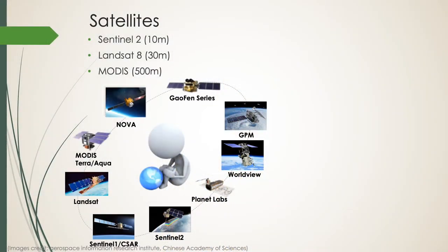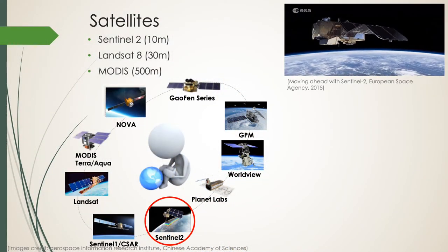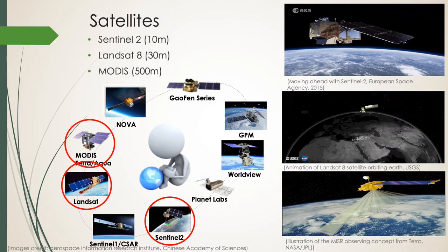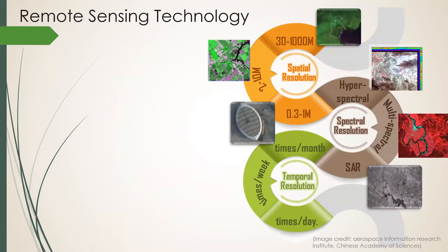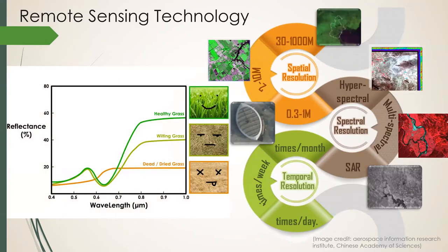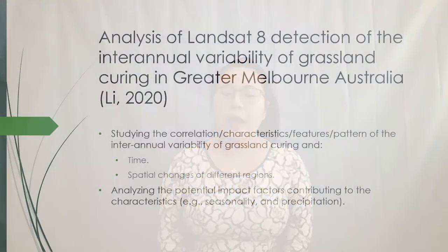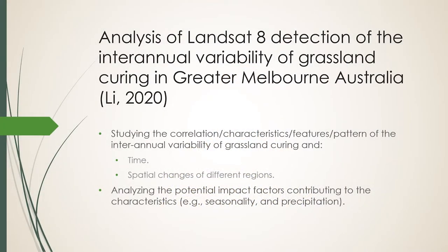There are many satellites in space. For my research, I used Sentinel-2, Landsat-8, and MODIS. Spatial resolution, spectral resolution, and temporal resolution determine the quality and frequency of the images. The liveliness of the grass is reflected by different spectral bands. The first step is to determine the inter-annual variability of grassland curing in Victoria and improve grassland curing estimates using higher spatial resolution satellite imagery.